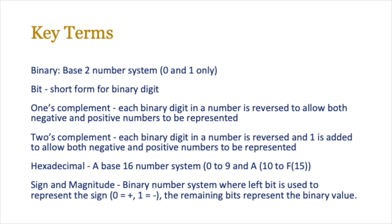The key terms you'll hear in this lesson include binary and bit, which you're okay with. The new things are ones complement — so far we've just looked at positive integers, and using ones complement we can represent a binary number in both negative and positive representations. Similarly, twos complement is where each binary digit is reversed and we add one to it, to allow both negative and positive numbers to be represented.